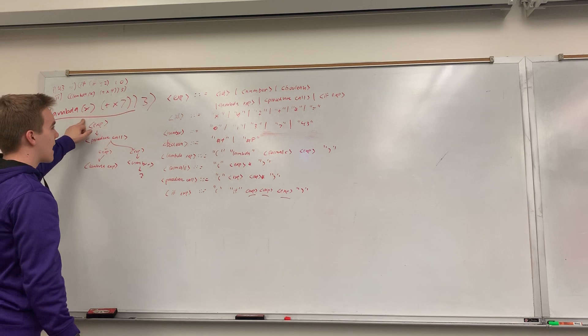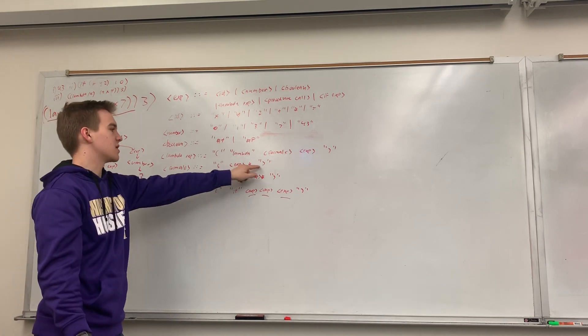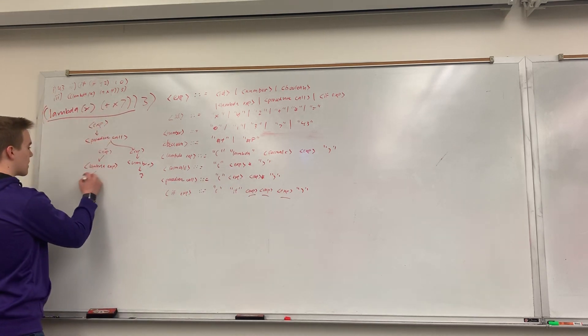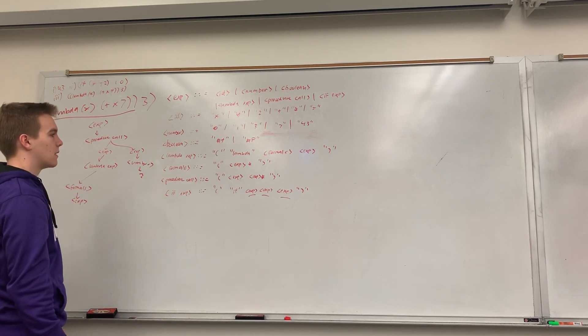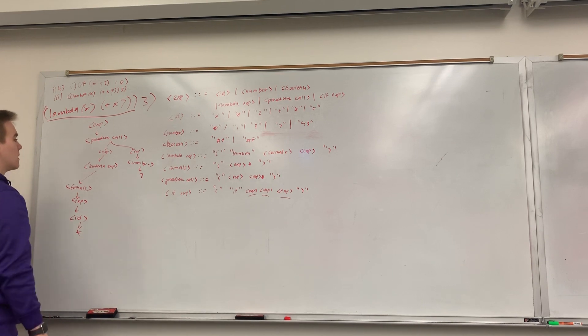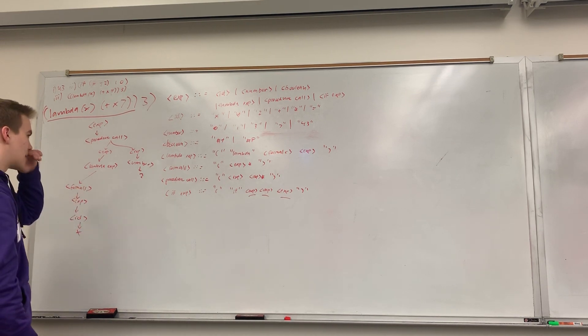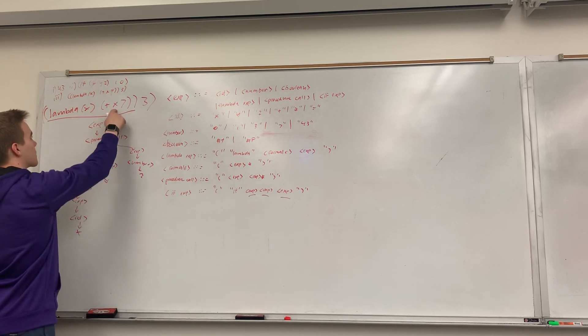Which will ask for formals and expression. The formals here is x. And, formals can be an expression in parentheses. So, this will get formals, which calls expression again. Which turns into x, because it goes to id. And, then, this lambda expression will also call expression. Which will give me this guy.